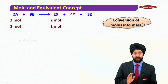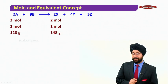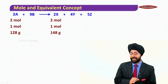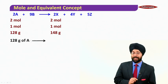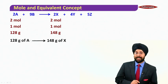And we first convert the moles into mass. So 128 grams of A will give you 148 grams of X based on the molecular mass data that was given to us. So from here we can say 128 grams of A produces 148 grams of X.